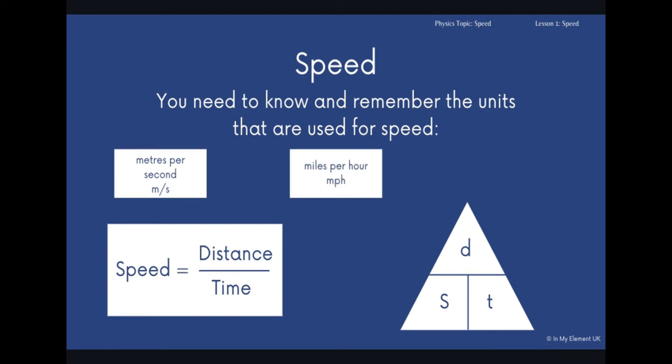You might have miles per hour. So that would mean that the distance has been measured in miles, and the time has been measured in hours. Be careful with hours, because if it's 0.5 an hour, obviously that's 30 minutes. Sometimes you might have to convert between hours, minutes and seconds, so that you're either measuring in seconds or in hours.